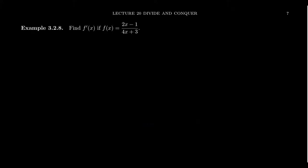Unlike the product rule, I'm not going to prove the quotient rule right now. It turns out that when we combine the product rule with the chain rule, we can prove the quotient rule quite easily, so we'll do that later to avoid a cumbersome proof. What I want to do now is apply the quotient rule to compute the derivative of the rational function (2x − 1) / (4x + 3).